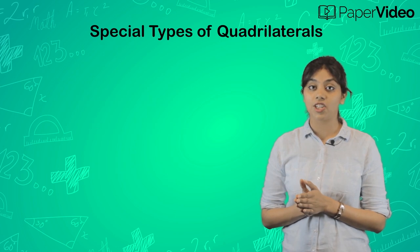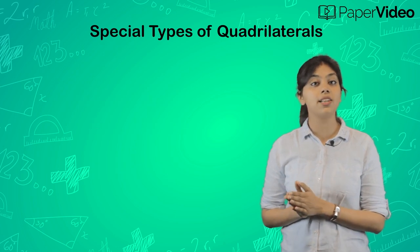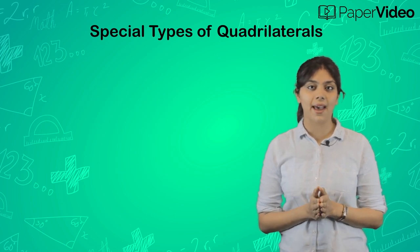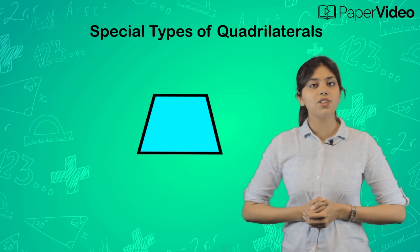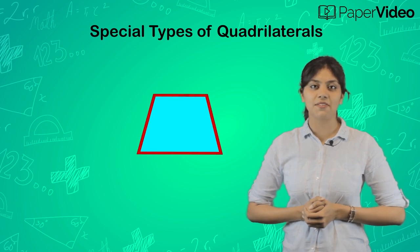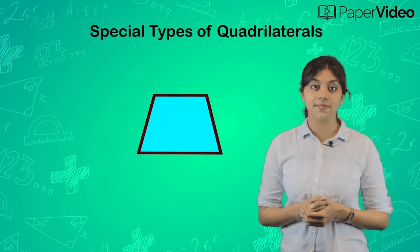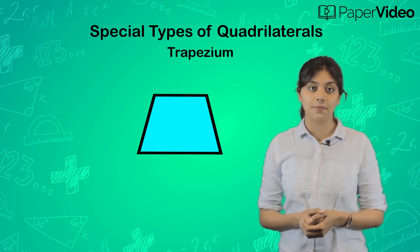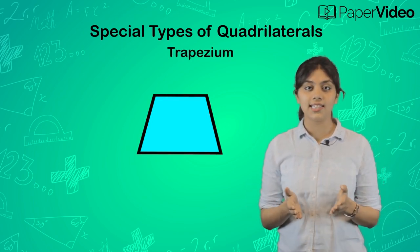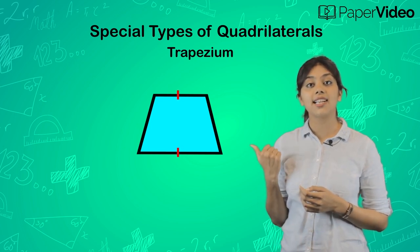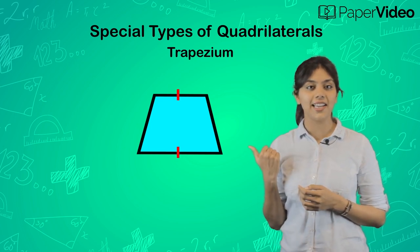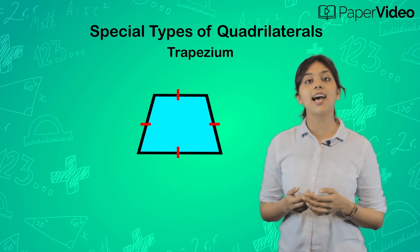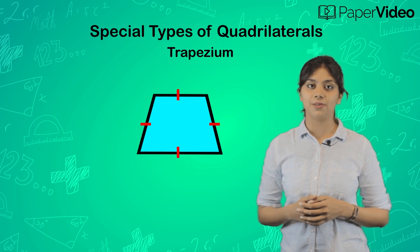Suppose we have a quadrilateral whose only one pair of opposite sides is parallel. Then what do we call such types of quadrilaterals? They are known as trapezium. In this trapezium, these two sides are parallel to each other, and these two sides are not parallel to each other.